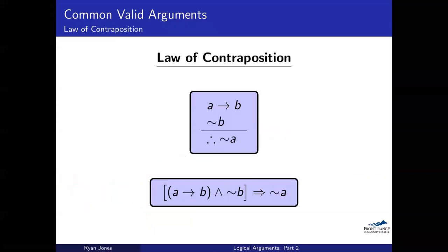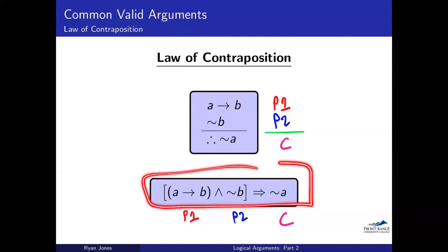Let's move on to the law of contraposition. I start off with premise one: 'if A then B.' Then premise two: 'not B' — there is no B. Then there's a conclusion. This is always valid. If you do a truth table for this big compound statement, you're always going to get all trues, every time.